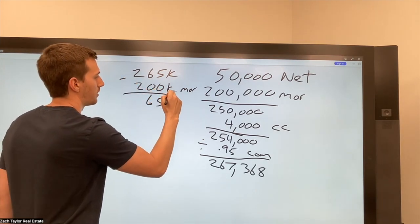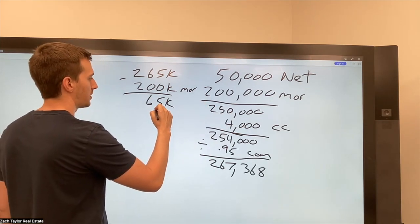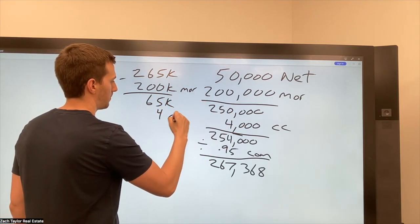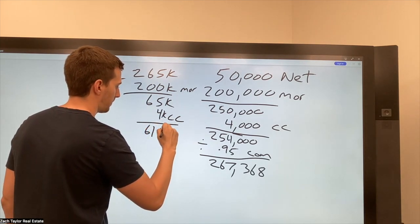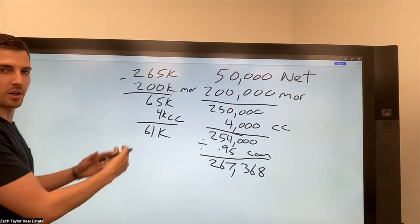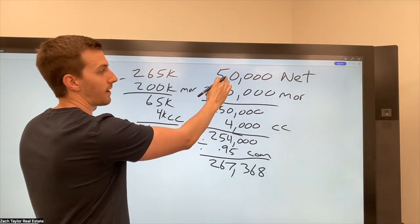So now we're at 65. And then we have 4,000 in closing costs. So we're at 61. Well, now there's $11,000 of difference in order to get them to net $50,000. So maybe I can't charge a 5% commission, but maybe I can lower that.